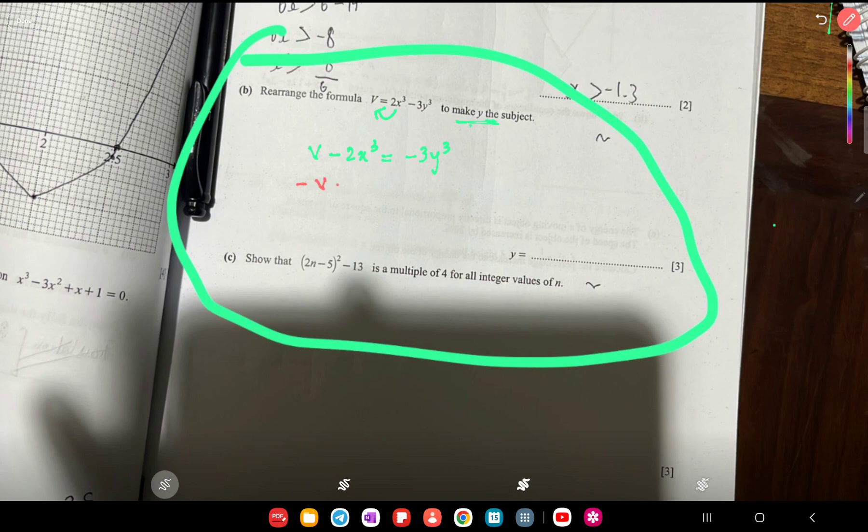Now we are going to divide because we have to isolate this term, so this is going to be (2x³ - v)/3 = y³.